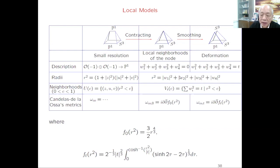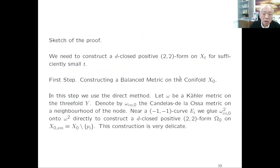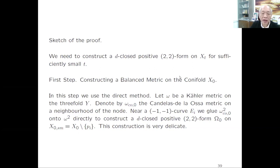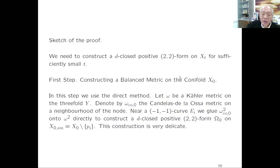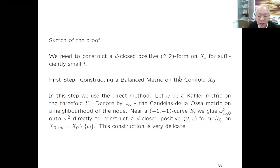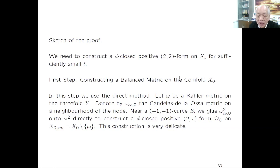We glue the Candelas–de la Ossa metric to construct a d-closed (2,2)-form on X_0 minus the resolution of the node—this gluing must be done very carefully and the construction is quite delicate. The resulting form is not balanced, so we must make it balanced. We deform the 4-form: the Candelas–de la Ossa metric has a 4-form Phi_T, but it is not a (2,2)-form. We decompose it by Hodge decomposition; there is a positive-definite (2,2)-form there, but there are coexact terms to handle.